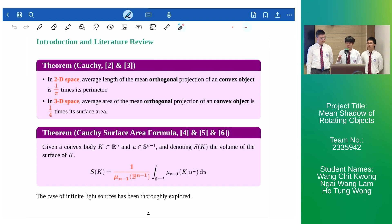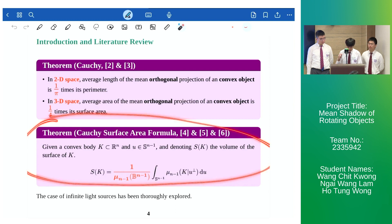Cauchy also published solutions for the case of R2 where the average length of the shadow of a convex object is 1 over pi times its perimeter. Years later the Cauchy surface area formula was extended to Rn. From the above we can observe that the case of infinite light source has already been thoroughly explored.